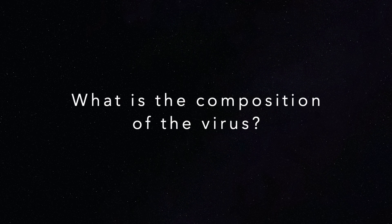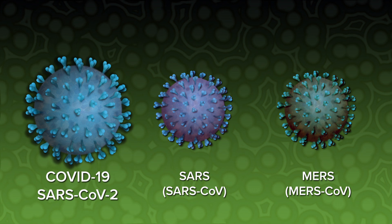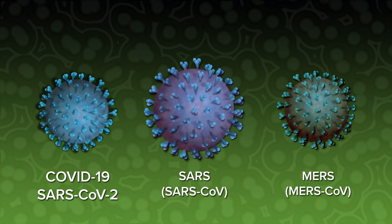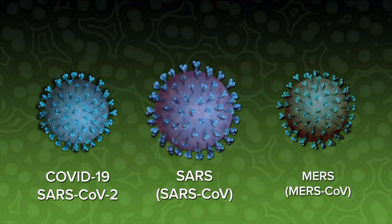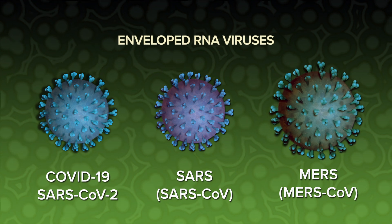What is the composition of the virus? SARS-CoV-2 is part of a large family of coronaviruses that include SARS, SARS-CoV, and MERS, MERS-CoV. These are also known as enveloped RNA viruses.